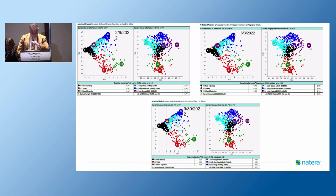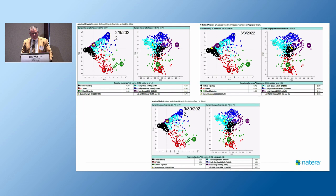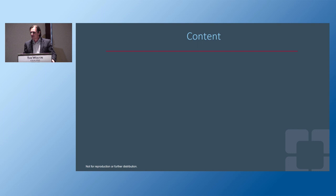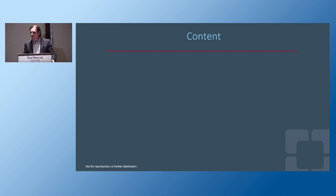Thank you very much, Emilio, for a great presentation. The next speaker is Dr. Poggio, professor of medicine and medical director of kidney transplantation at Cleveland Clinic. My presentation will be focused on DSA and the absence of graft rejection — looking at the role of de novo donor-specific antibodies in kidney allograft outcomes and development in the context of clinical graft rejection, but also in the setting of stable kidney function.